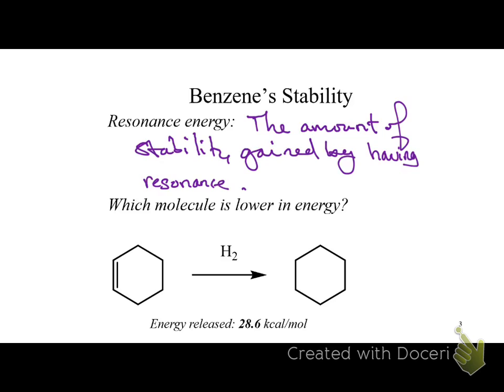We're going to look at the resonance energy of benzene. Benzene is a cyclohexatriene — six carbons with three double bonds at positions 1, 3, and 5 — but it's more formally just known as benzene. Its formula is C₆H₆, and each carbon in the ring has one hydrogen on it.